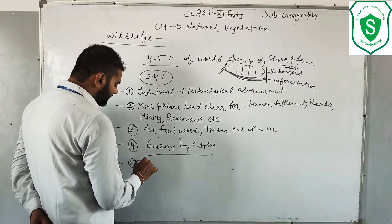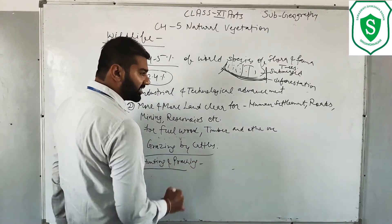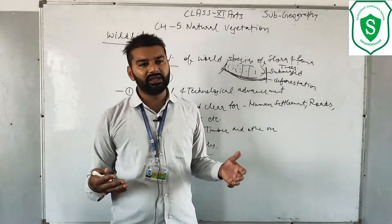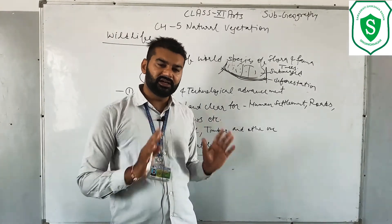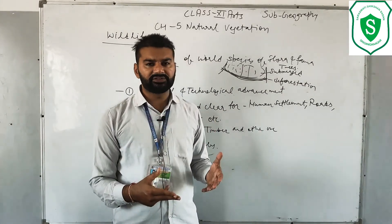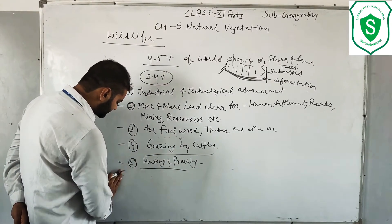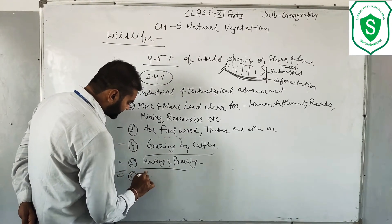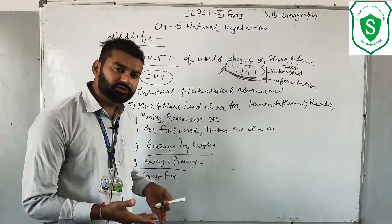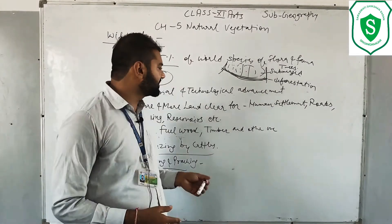पाँचवाँ factor है hunting और poaching। पुराने समय में राजा-महाराजा और elite लोग hunting को एक sport की form में करते थे जिसमें एक ही time में hundreds of animals का शिकार हो जाता था। आज भी economic importance की वजह से animals की hunting और poaching जारी है। Sixth factor है forest fire — जंगलों में लगने वाली आग से भी biodiversity और vegetation का loss होता है।